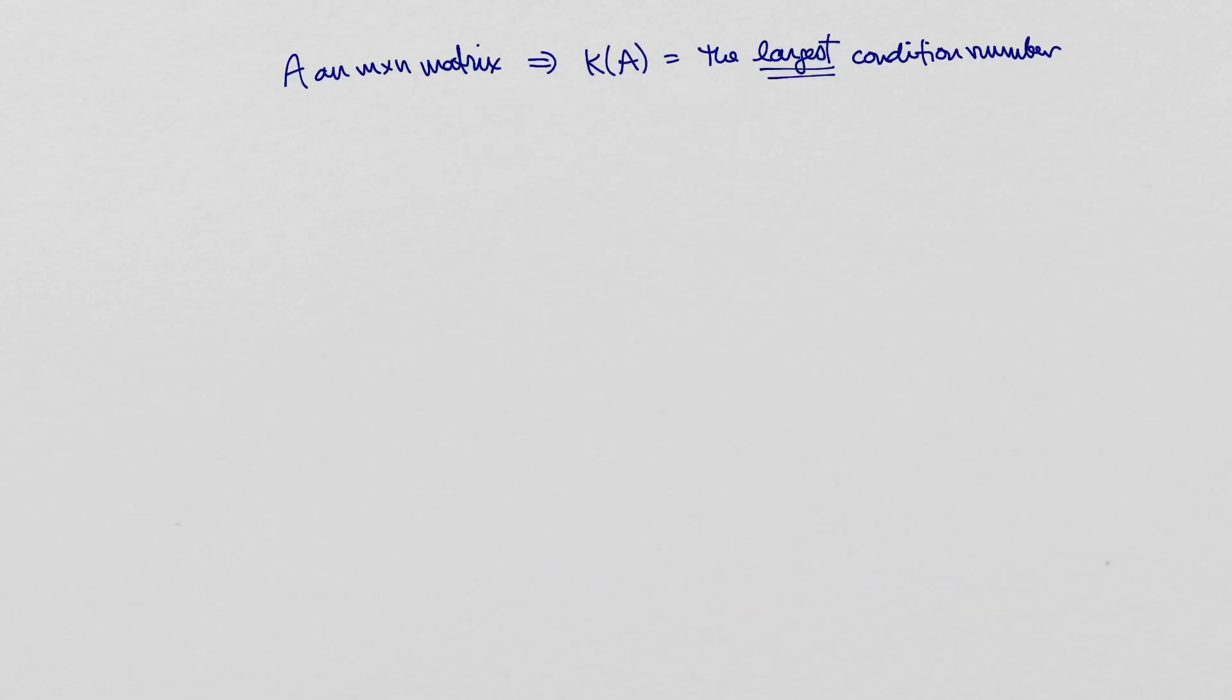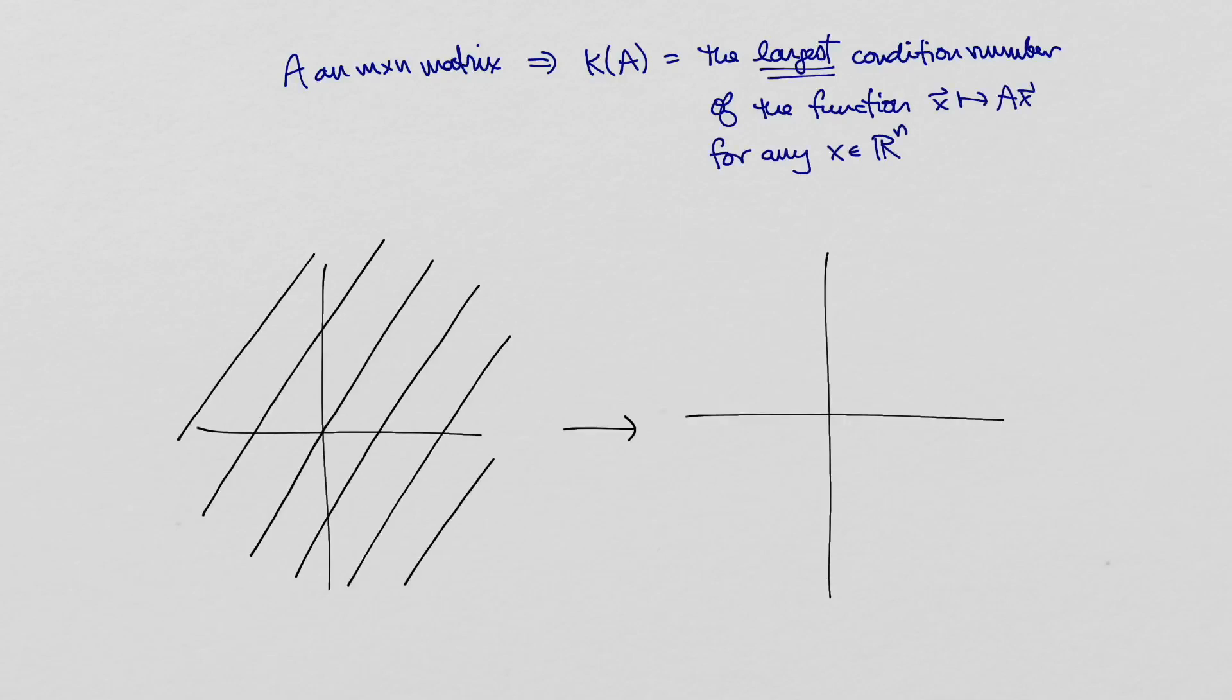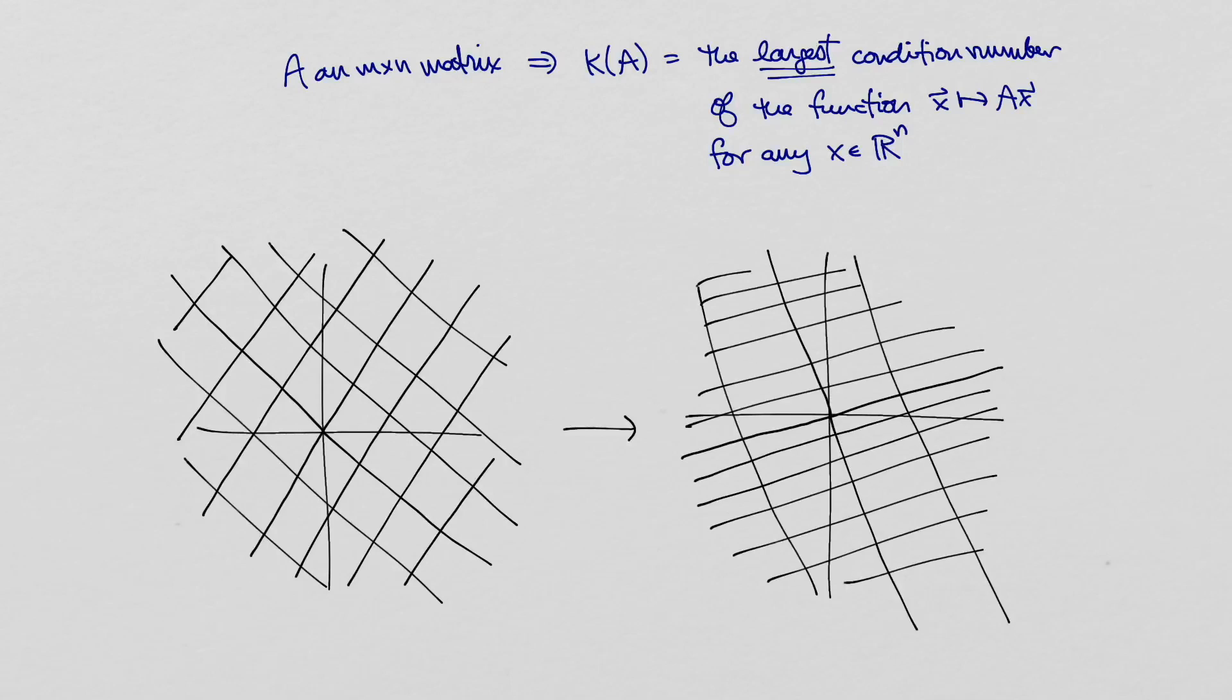If A is a matrix, then we can use the singular value decomposition of A to find the condition number of the linear transformation that A represents. Suppose that U sigma V transpose is the singular value decomposition of A with the diagonal entries of sigma arranged in decreasing order.